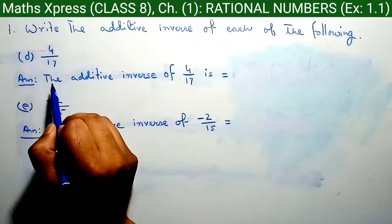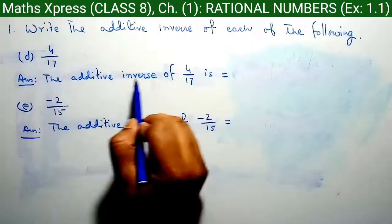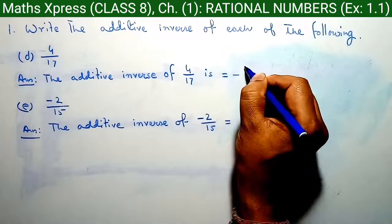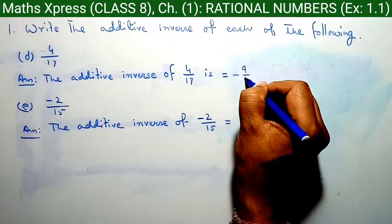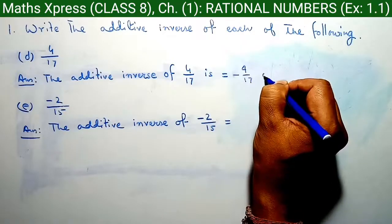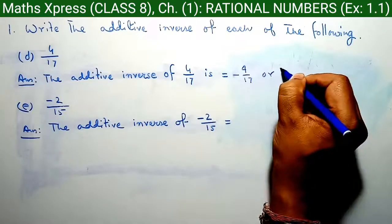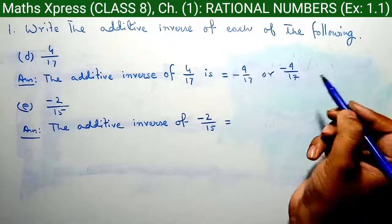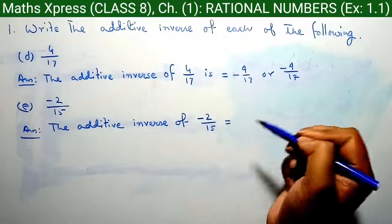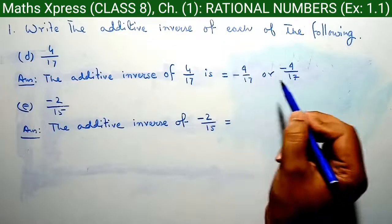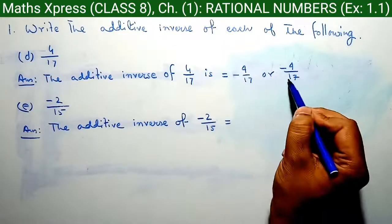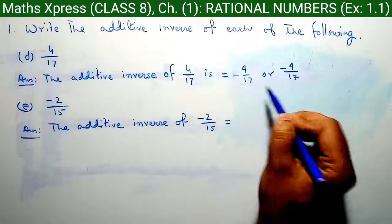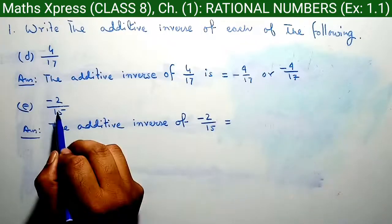Question D: 4 by 17. The additive inverse of 4 by 17 is minus 4 by 17. According to the question, this is our answer. Both forms represent the same value.